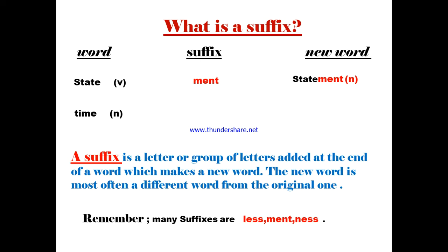A suffix is a group of letters added at the end of a word to give a new word. The same here — 'time,' it's a noun. Let's add a group of letters: L-E-S-S. So the new word will be 'timeless.' 'Timeless' is an adjective, so this group of letters is called suffix '-less.' Remember, many suffixes are '-ment' and '-less'.